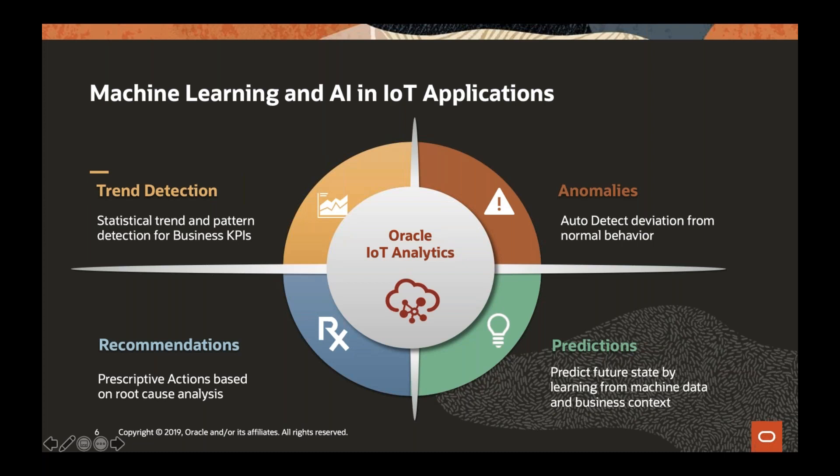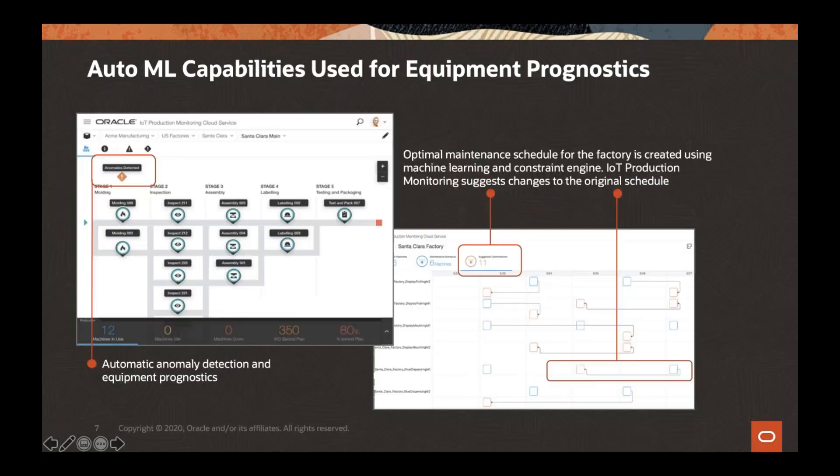Oracle IoT analytics heavily uses machine learning and artificial intelligence technologies in four stages: statistical trend detection, self-detection of anomalies, prediction of the future state, and a prescriptive stage ensuring recommendations for corrective actions. One of the major roles of machine learning in the factory is automatic anomaly detection and equipment prognostics, so that optimal maintenance can be scheduled. The IoT production monitoring can also suggest changes to the original schedule.